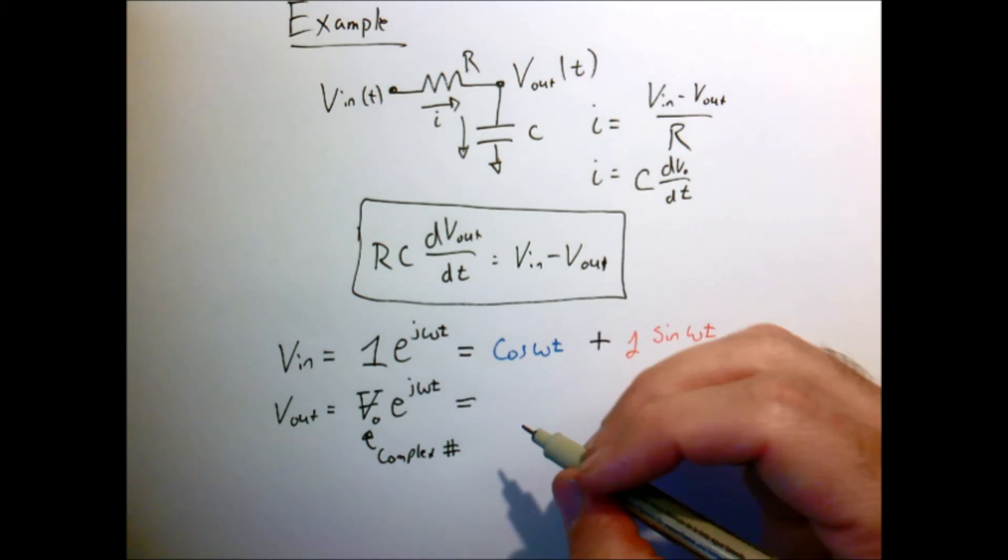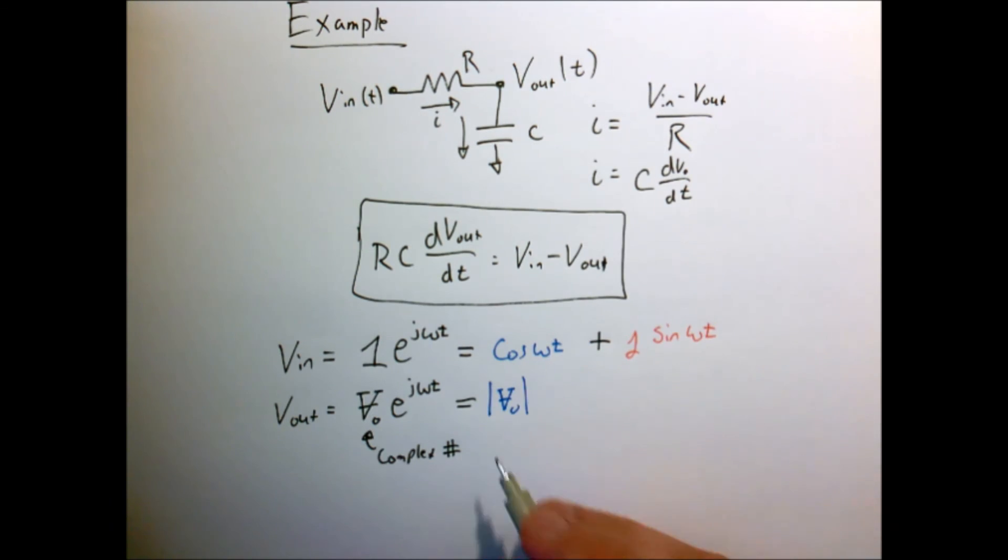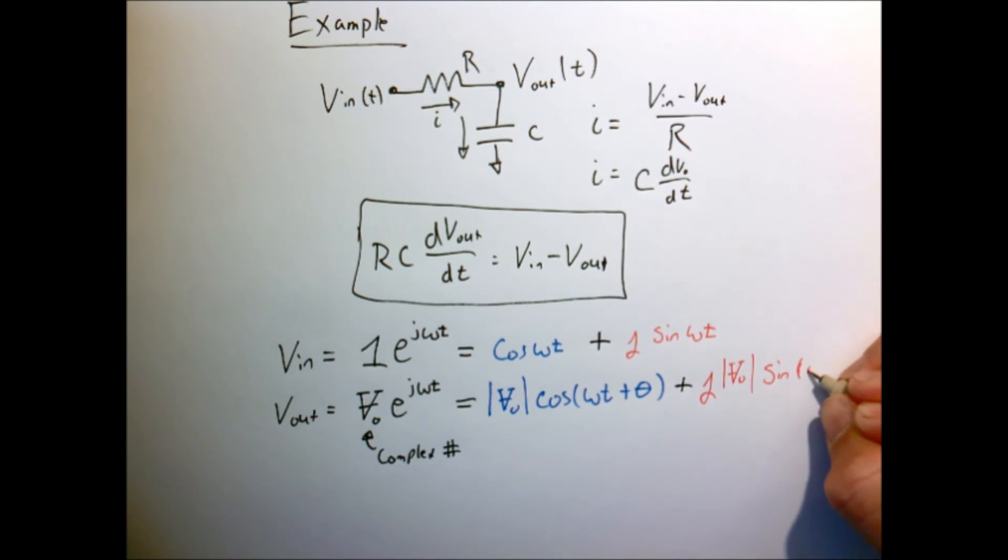So this will be equivalent to the magnitude of this complex number V naught. This is just using the relationship that we derived on the previous page, but now represented in our complex number is the amplitude and the phase of our signal.